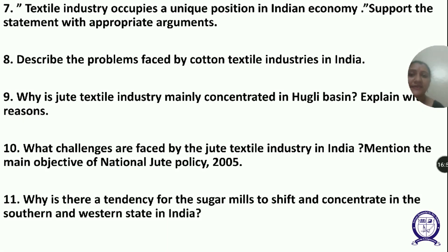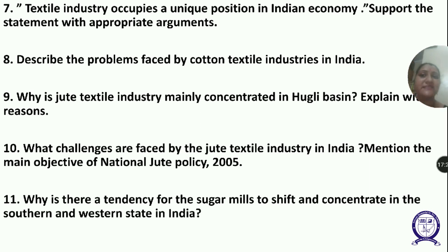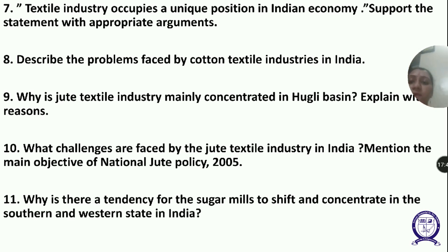Next question: Why is there a tendency for sugar mills to shift to southern and western states? Sugarcane produced in southern and western states has higher sucrose content, and the cooler climate allows a longer crushing season. Most sugar mills in these areas are under the cooperative sector, ensuring a regular supply of raw material. Cooperatives are more successful here, there is more government attention, and better port facilities in southern and western states.